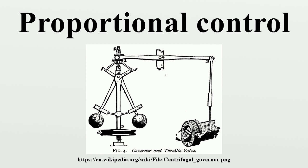Proportional control action leaves out an error called offset error. Once a disturbance occurs in the steady state condition, any corrective control action based purely on proportional control will always leave an error between the next steady state and the desired set point. This error is called an offset error.